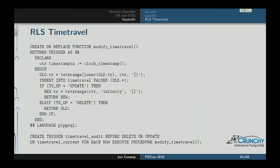There's a trigger that maintains this automatically. Any time I update a row, I create the old row with the upper range of the TR field set to the current clock timestamp. For any new row, the lower range has the current timestamp. That's the function and the trigger.